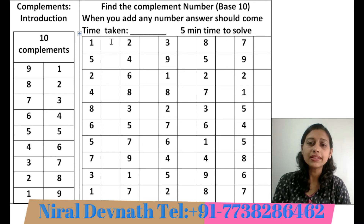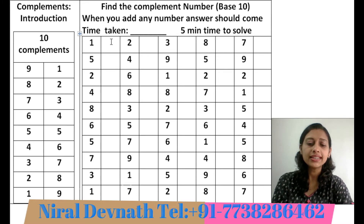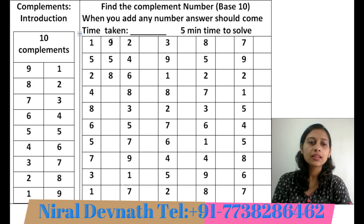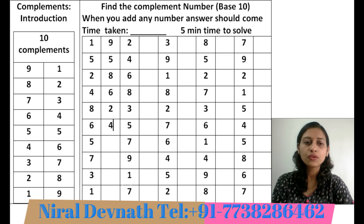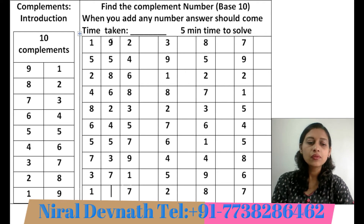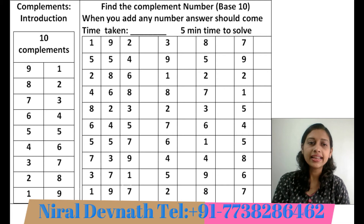For example, I am solving the first column: 1's friend is 9, 5's friend is 5, 2's friend is 8, 4's friend is 6, 8's friend is 2, 6's friend is 4, 5's friend is 5, 7's friend is 3, 3's friend is 7, 1's friend is 9. In this way, you have to write all the answers.